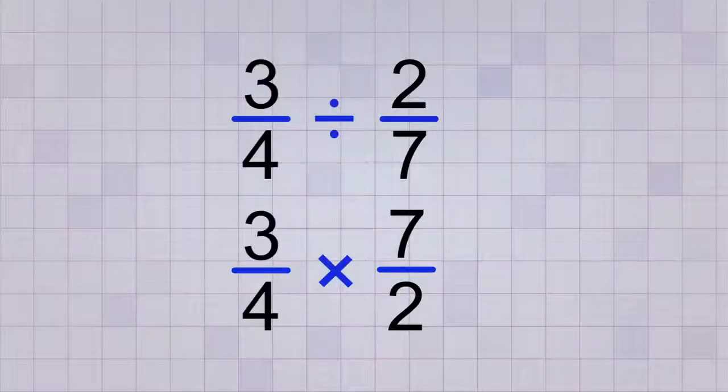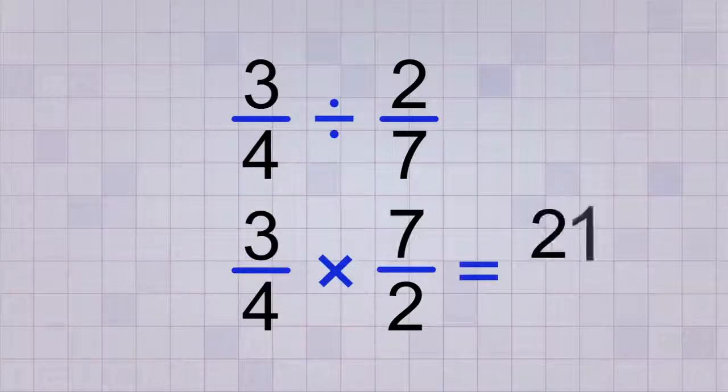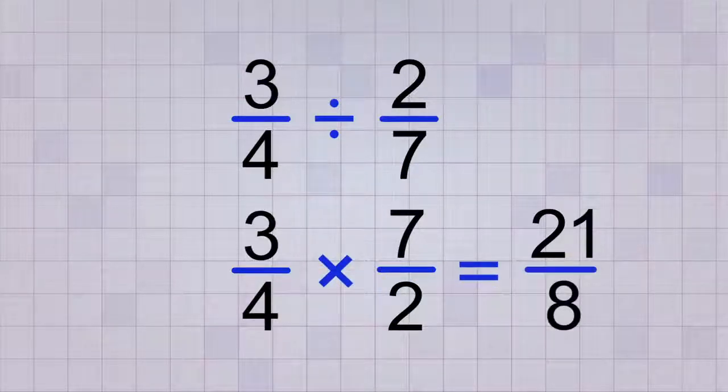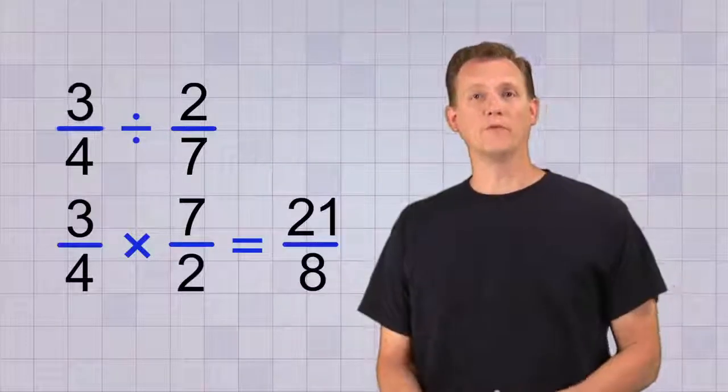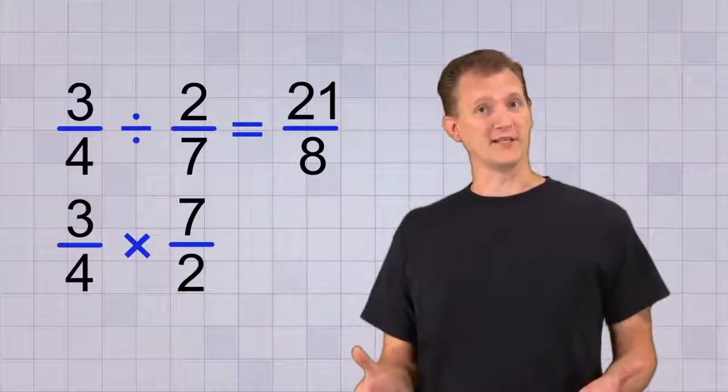Okay, now that our problem has been changed to multiplication, it's easy. Just multiply the tops, 3 times 7 equals 21, and multiply the bottoms, 4 times 2 equals 8. And we have the answer to our fraction division problem. So 3 over 4 divided by 2 over 7 is 21 over 8. So that's pretty easy, but let's try one more example.